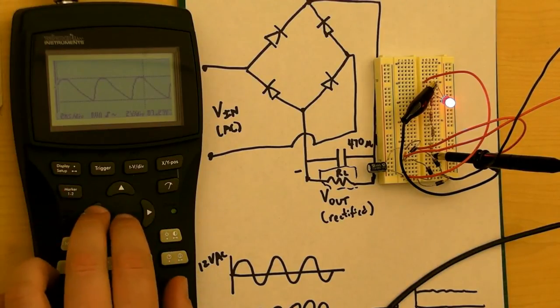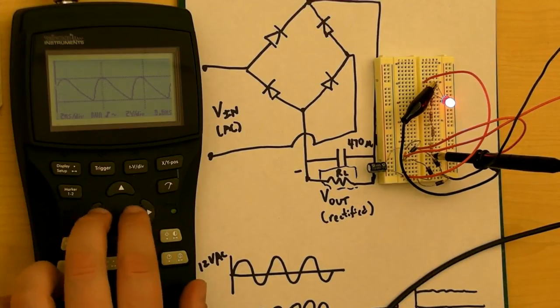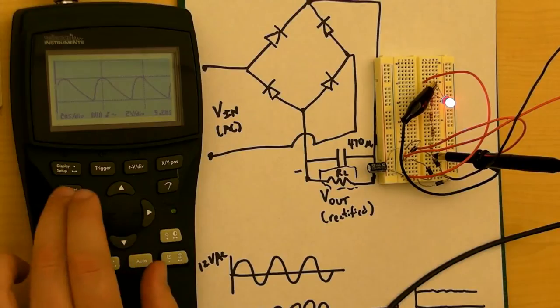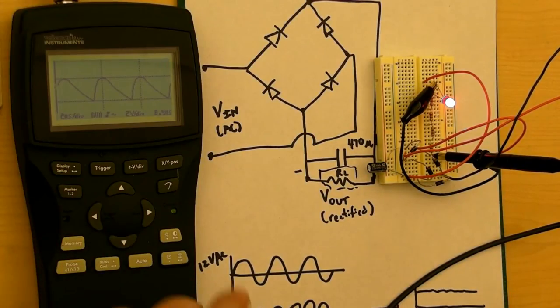I'm going to push the marker again so I can get to the first marker. Now I'm with the second marker. And now we can see that there's 8.4 milliseconds between peaks here.